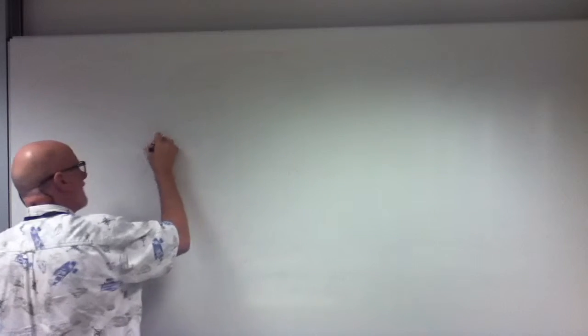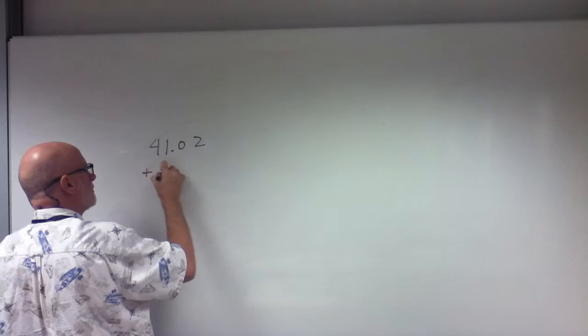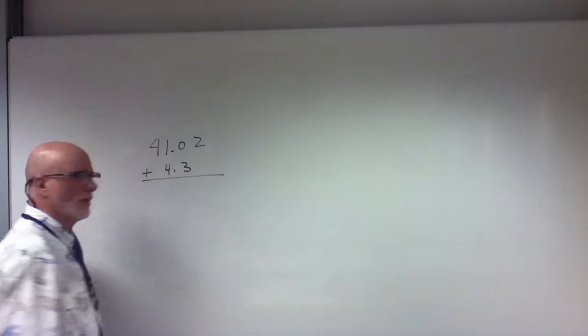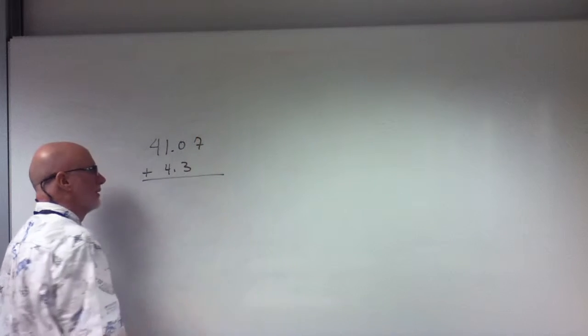Alright, so let's do a few problems here. So if I have 41.02 plus 4.03, I want to know the answer to that. Let's make this more interesting and make that a 7. Okay, so that's number 1.